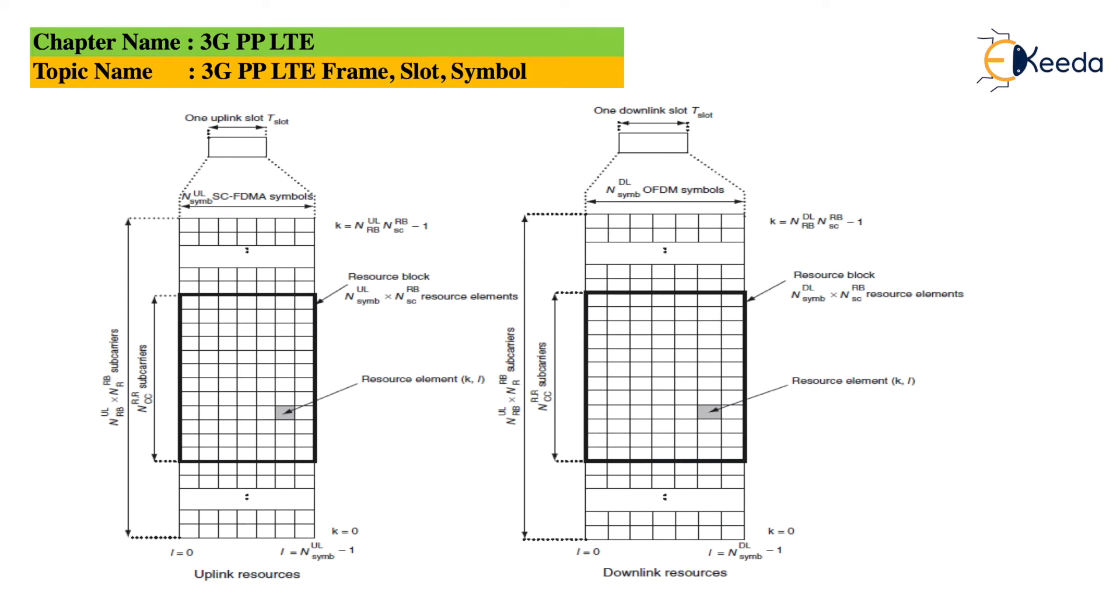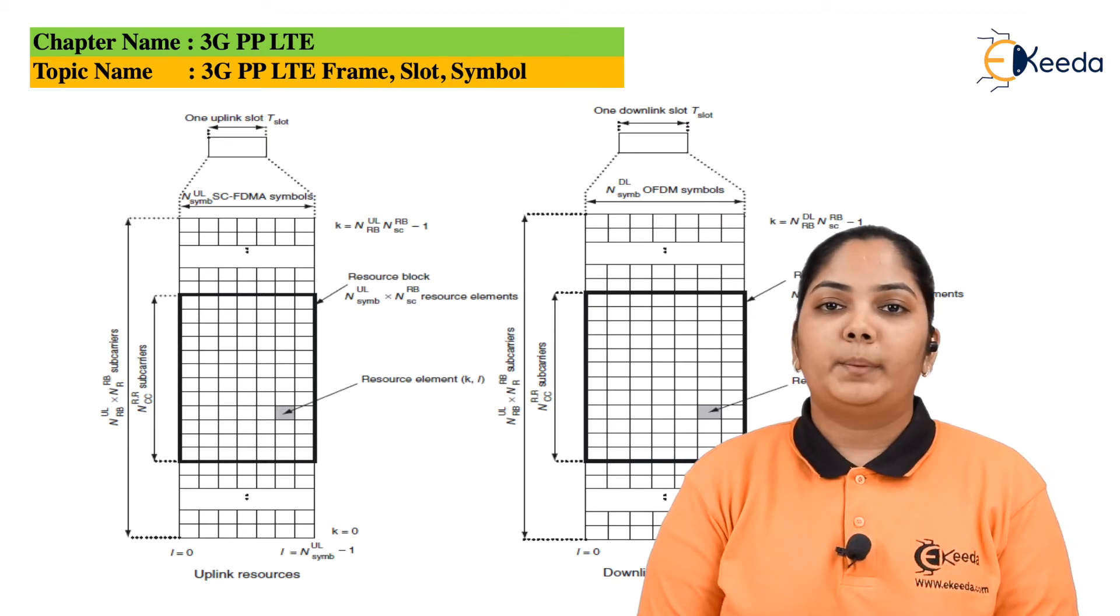So here we can see one resource block having 12 subcarriers. Symbols are in horizontal direction whereas the carriers are in the vertical direction over the duration of one single slot. For uplink, a continuous resource block has been assigned to the mobile station.